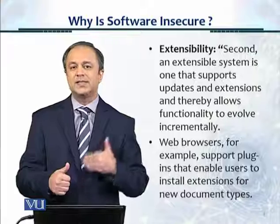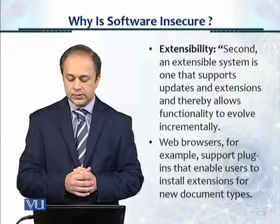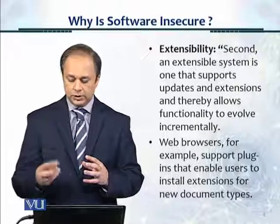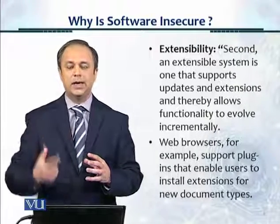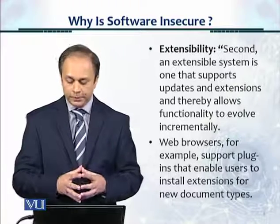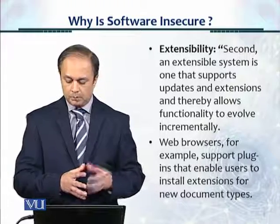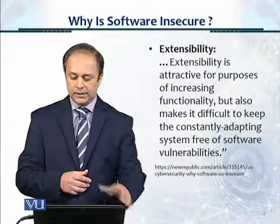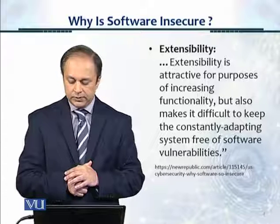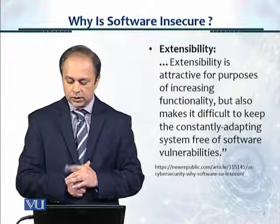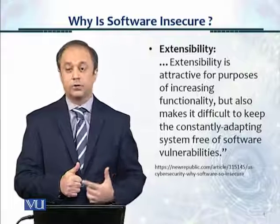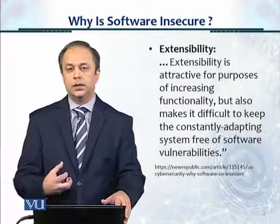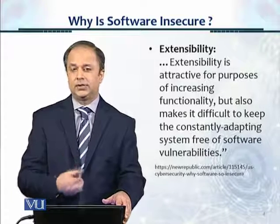The second issue Gary McGraw talks about is extensibility. An extensible system is one that supports updates and extensions, thereby allowing functionality to evolve incrementally — that's just the architecture of the software. Web browsers, for example, support plugins that enable users to install extensions for new document types. Extensibility is attractive for increasing functionality, but also makes it difficult to keep the constantly adapting system free of software vulnerabilities.